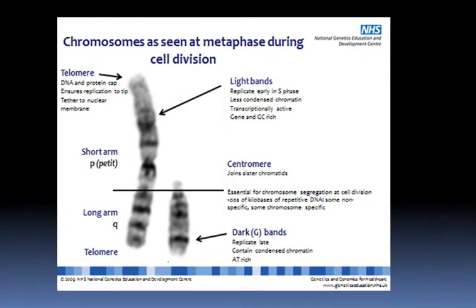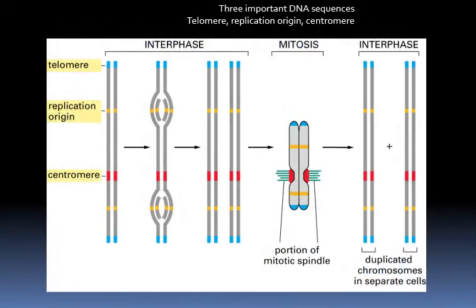The centromere divides the chromosome into a short arm called p and a long arm called q. As well as telomeres and centromeres, the chromosome contains replication origin sites where the replication fork begins to form.